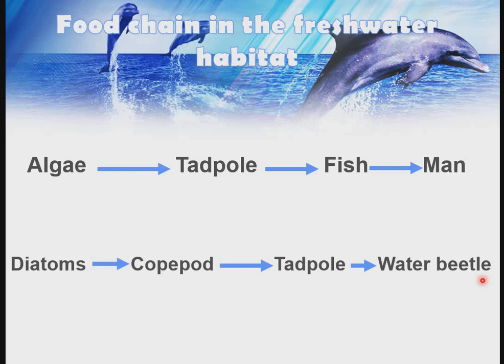Having achieved our stated objectives today — listing the three types of aquatic habitat, describing the characteristics of each habitat, recognizing adaptive features of plants and animals, and constructing food chains — we will stop our lesson here today on aquatic habitat. Till next week, stay safe, thank you.